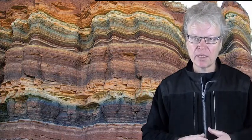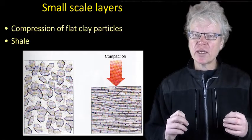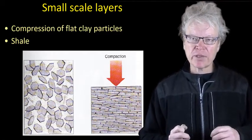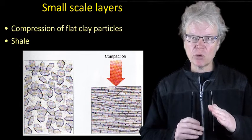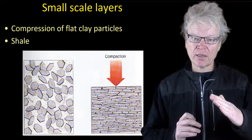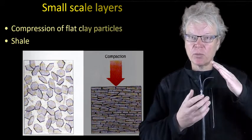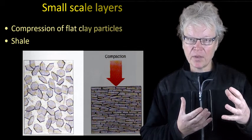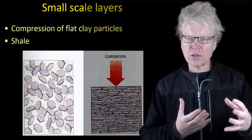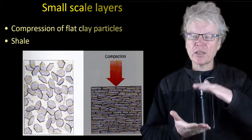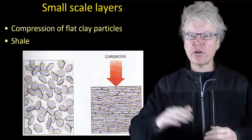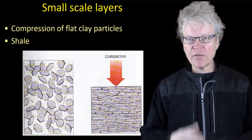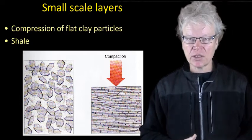You can also get small scale layering. Clay is very small but very flat, and flat clay particles will be deposited and under pressure those flat particles can align with each other. If that's preserved, you can get a very flat surface as seen in shale. If the particles don't align, you get mudstone or claystone.